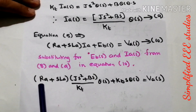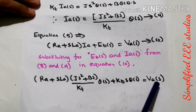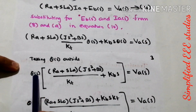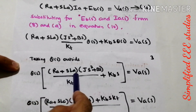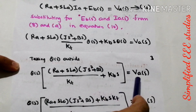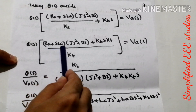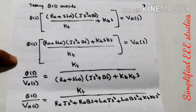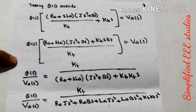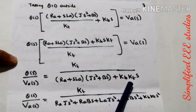After substituting, we get: (Ra + S·La)·[(J·S² + B·S)/Kt]·θ(S) + Kb·S·θ(S) = Va(S). Taking θ(S) as a common factor: θ(S)·{(Ra + S·La)·(J·S² + B·S)/Kt + Kb·S} = Va(S). Simplifying: θ(S)·{(Ra + S·La)·(J·S² + B·S) + Kb·Kt·S} / Kt = Va(S). Taking the ratio of output θ(S) to input Va(S), the transfer function becomes: θ(S)/Va(S) = Kt / [(Ra + S·La)·(J·S² + B·S) + Kb·Kt·S].